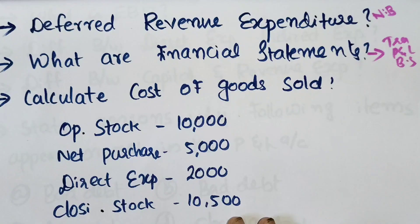We will see the two and three mark questions. The topic is deferred revenue expenditure. Deferred revenue expenditure is an expenditure of a revenue nature incurred in the current year, but the benefit of which accrues gradually or lasts for more than one accounting year — not only one accounting year.